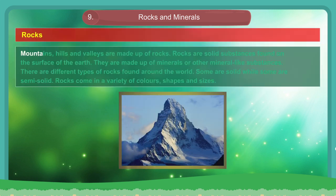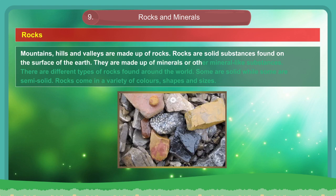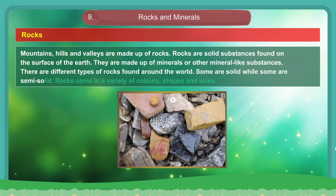Rocks. Mountains, hills and valleys are made up of rocks. Rocks are solid substances found on the surface of the earth. They are made up of minerals and other mineral-like substances. There are different types of rocks found around the world. Some are solid while some are semi-solid. Rocks come in a variety of colors, shapes and sizes.